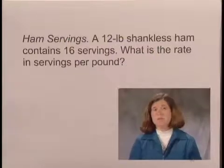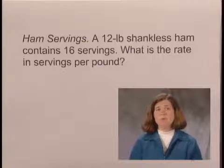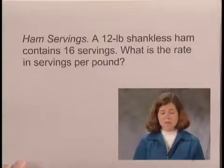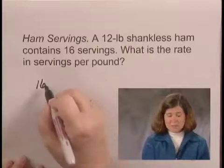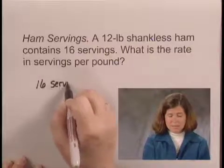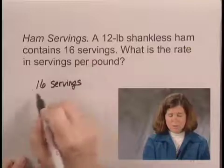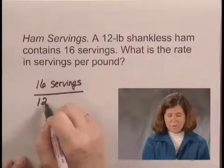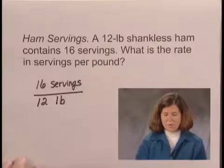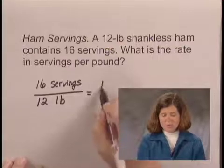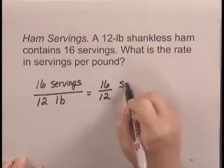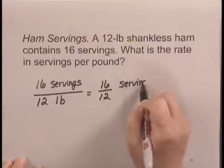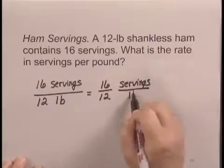Since we're asked for the rate in servings per pound, the servings will go in the numerator. Pounds will go in the denominator. We have 16 servings per 12 pounds. We can rewrite this as the rate 16 over 12 and the unit servings per pound.